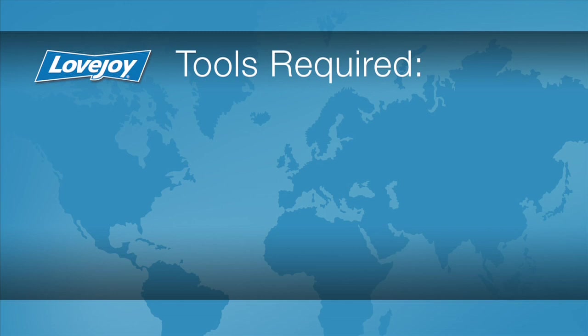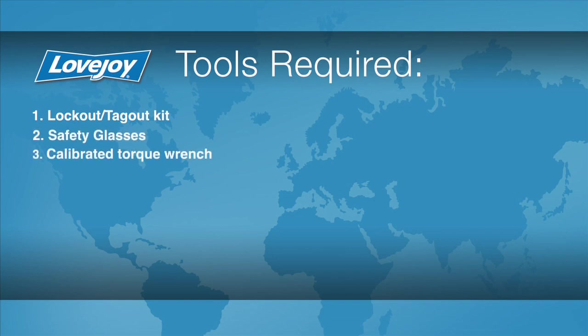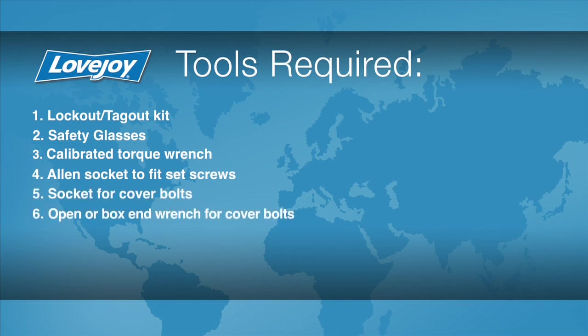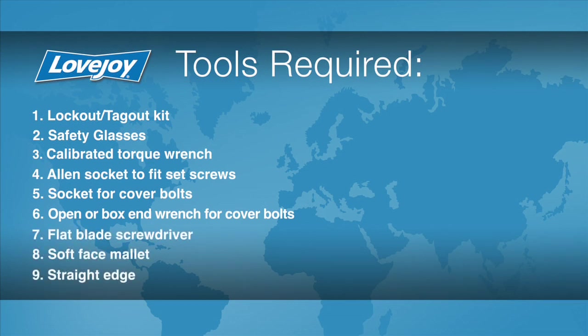Let's look at the necessary tools we will need to perform this installation. A lockout tagout kit, safety glasses, calibrated torque wrench, Allen socket to fit the set screws, socket for cover bolts, an open or box end wrench for the cover bolts, flat blade screwdriver, a soft face mallet, a straight edge, and a dial indicator.